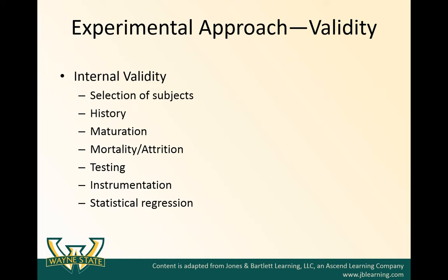A lot of the ways to try to minimize biases that might occur because of these threats and to try to improve internal validity has to do with including a control group and randomizing participants to groups. The idea of statistical regression is sometimes hard for students to understand, and you might hear this called regression to the mean.